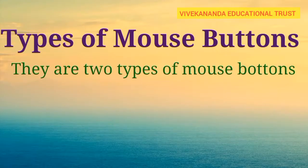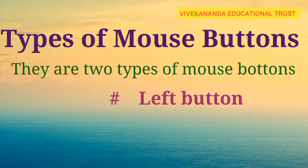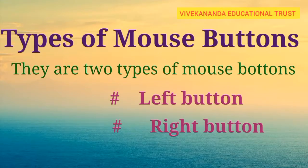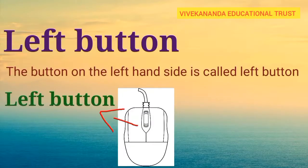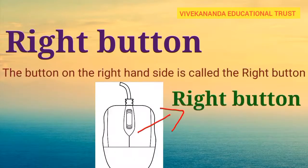Types of mouse buttons. There are two types of mouse buttons. One is left button and another one is right button. The button on the left hand side is called left button. The button on the right hand side is called the right button.